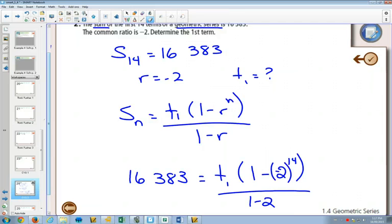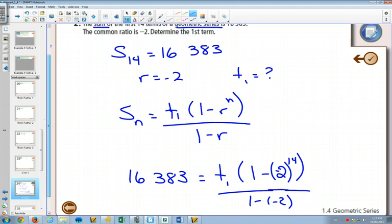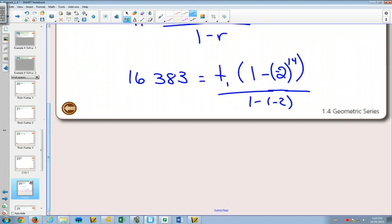Love this negative in here. So you've got 1 minus negative 2 to the 14th. The reason I love this negative is because it can cause some issues. The question is, can I change these two negatives in the bottom to a positive? Is that 1 plus 2? Yes, so that's 3. Can I change the two negatives inside to a positive? No.